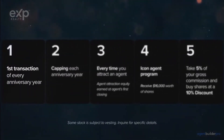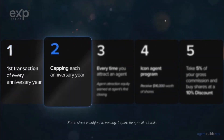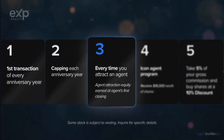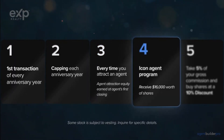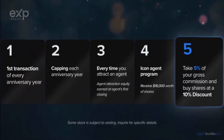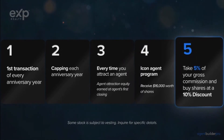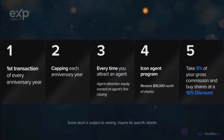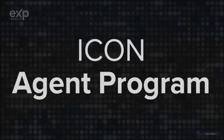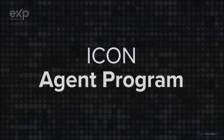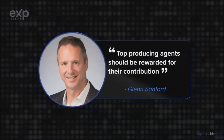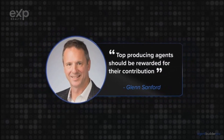Every agent at eXp has the opportunity to become a shareholder in eXp World Holdings — earn equity awards for closing your first transaction each year, capping each year, and every time an agent you attracted joins eXp and does their first transaction. Our agent equity program helps agents prepare for retirement. You can elect to take five percent of your gross commission per transaction and buy the company's stock at a 10% discount. Our ticker symbol is EXPI. Note that some stock awards are subject to vesting.